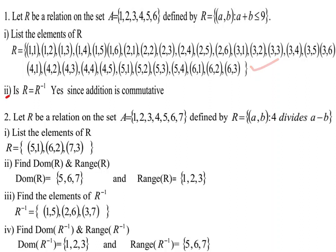Part two asks: is the relation R equal to R inverse? The answer is yes, because addition is commutative. Therefore, since addition is commutative, the given relation R on set A means that R and R inverse are equal.